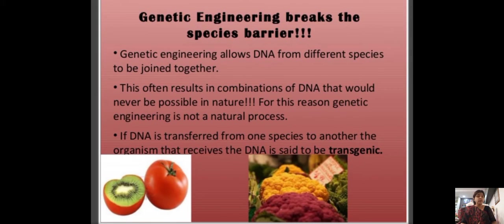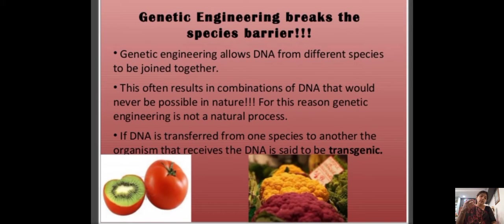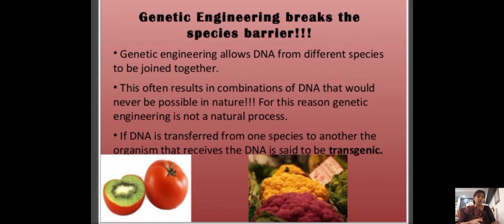If DNA is transferred from one species to another, the organism that receives the DNA is said to be transgenic. For example, we can have different varieties of tomato — tomato plus potato combinations, cauliflower with different colors. We can add color and size traits, so we have different species of different types. These varieties are produced due to genetic engineering.